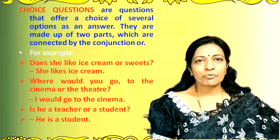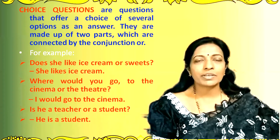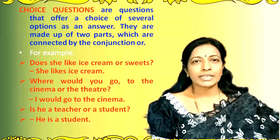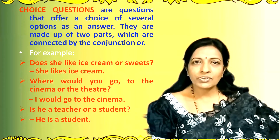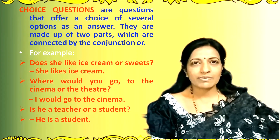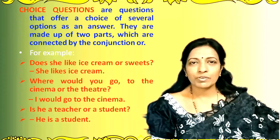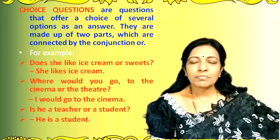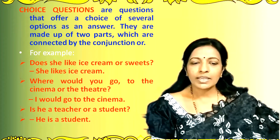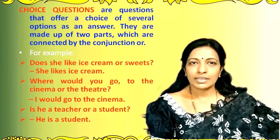The next type of questions are choice questions. These are questions which offer a choice where several options are given. They consist of two or more parts connected by the conjunction 'or.' For example: 'Does she like ice cream or sweets?' — 'She likes ice cream.' We can see that the question gives two options — ice cream or sweets — and the person who answers has to select one. Another example: 'Would you go to the cinema or the theatre?' — 'I would go to the cinema.' 'Is he a teacher or a student?' — 'He is a student.'